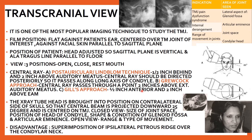The x-ray tube head is placed on the contralateral side of the skull, projecting the central beam downward at 25 degrees centered on the TMJ. In the closed view, you can observe the joint space size, position of the condylar head, shape and condition of the glenoid fossa, and the articular eminence. In the open view, you can assess the range and type of joint movement.